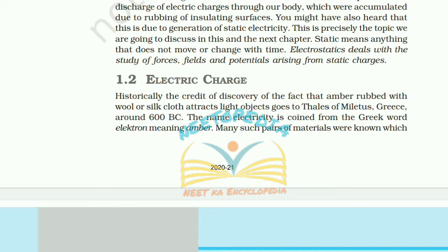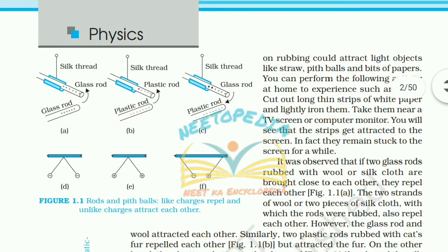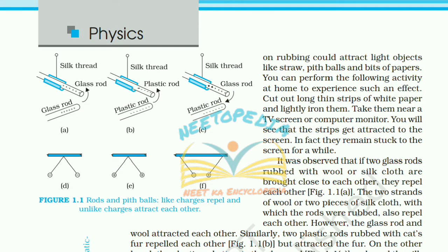1.2 Electric Charge. Historically, the credit of discovery goes to Thales of Miletus, Greece, around 600 BC, for the fact that amber rubbed with wool or silk cloth attracts light objects. The name electricity is coined from the Greek word 'electron' meaning amber. Many such pairs of materials were known which on rubbing could attract light objects like straw, pit balls, and bits of paper. You can perform an activity at home: cut out a long strip of white paper, lightly iron it, and take it near a TV screen or computer monitor.